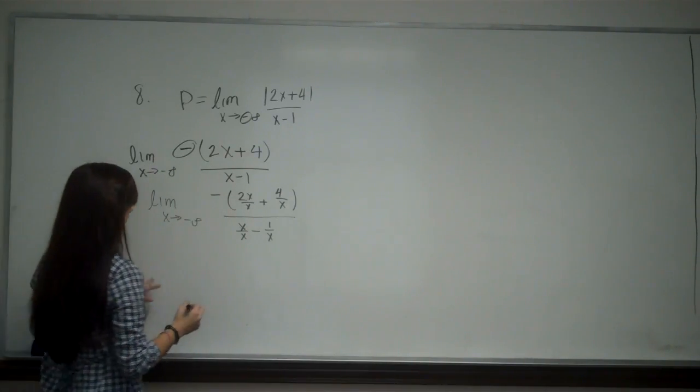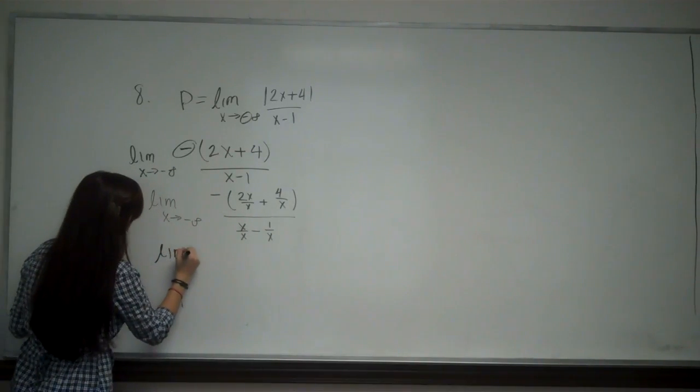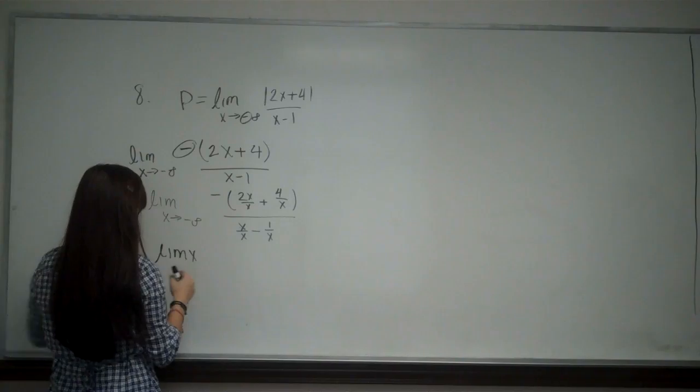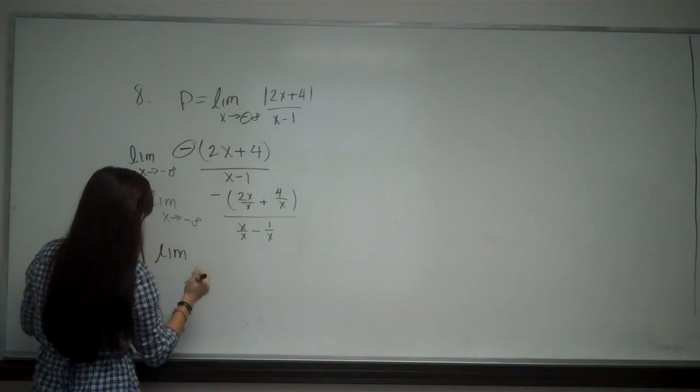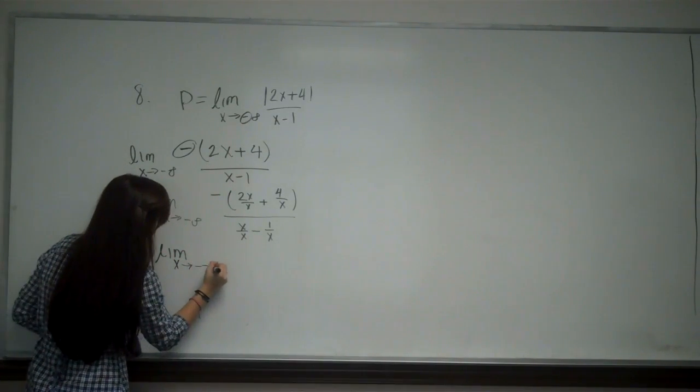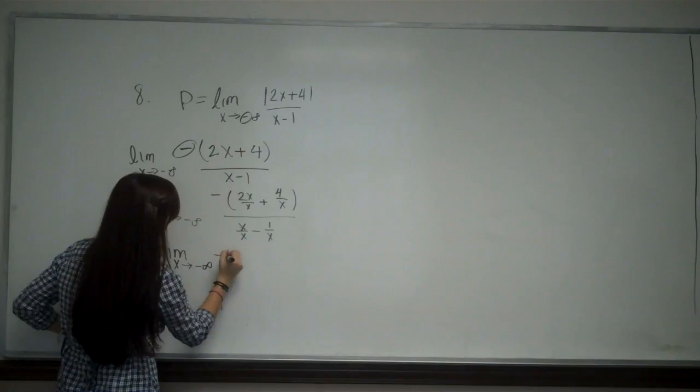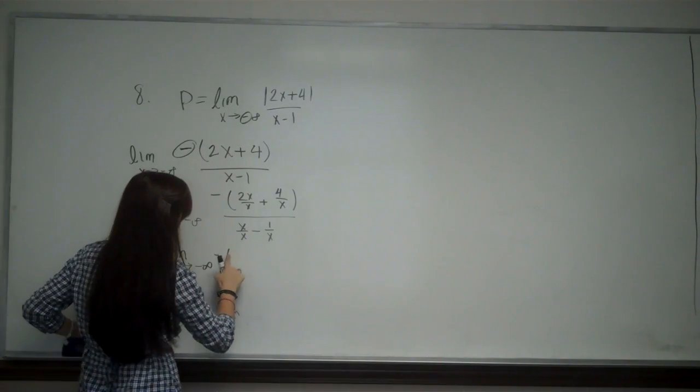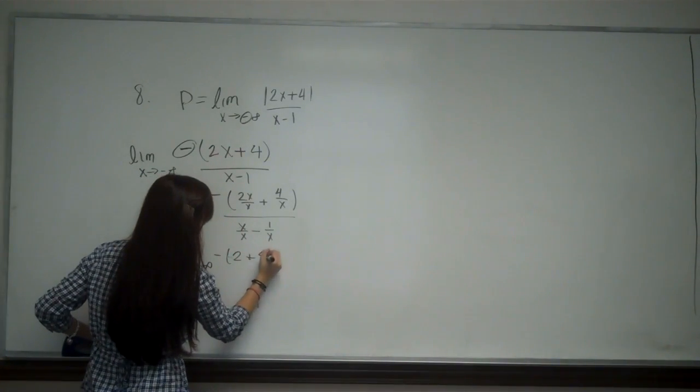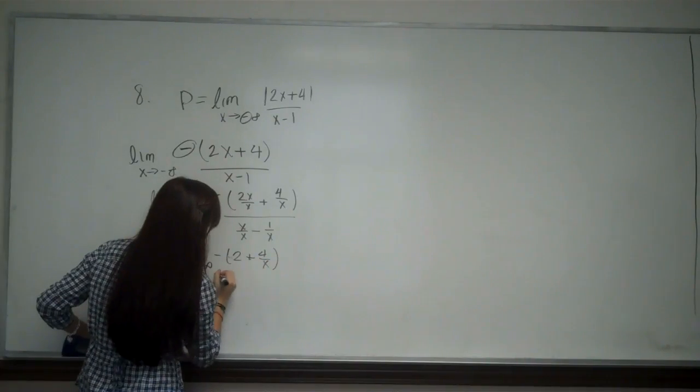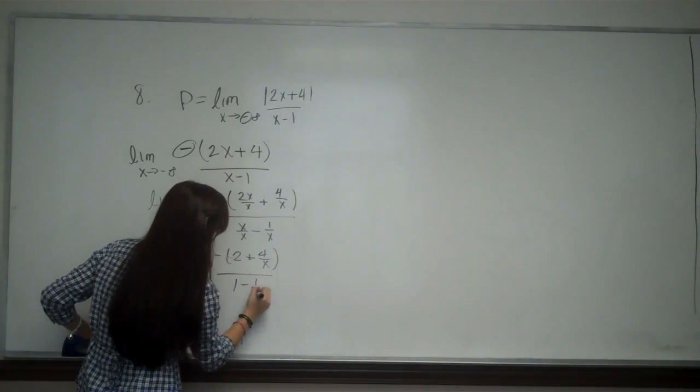So I'm going to simplify a little bit, and that's the limit as X approaches negative infinity. When I simplify here, I just get negative 2 plus 4 over X over 1 minus 1 over X.